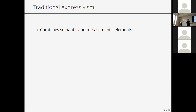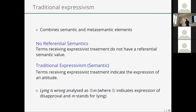I'll focus on traditional Expressivism — a very traditional version that nobody probably holds anymore. But it's good to start from there because in certain ways traditional Expressivism is actually closer to more recent versions. We think of traditional Expressivism as combining semantic and metasemantic elements. On the semantic side, traditional Expressivism has a negative component and a positive component.